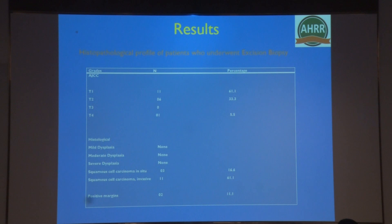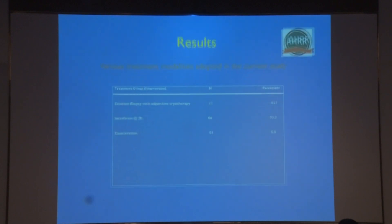As per AJCC classification, eleven patients had T1 grade, six patients had T2, and one patient had T4 grade. Squamous cell carcinoma in situ was found in three patients and the invasive type in eleven patients. In two patients, positive margins were found, for which adjuvant chemotherapy was started.